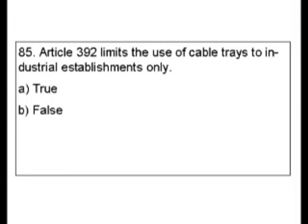We could go and look up cable trays in the index and look at uses permitted and not permitted. If we know that Article 392 refers to cable trays, we can go straight there and probably find that right at the beginning, like we mentioned on our earlier question on IMC.